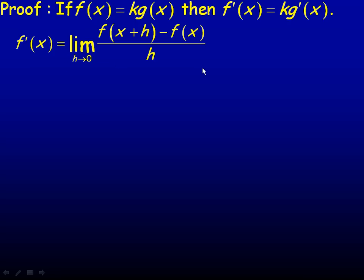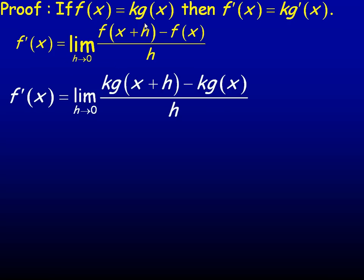So here's the definition of the derivative. Now, f(x) is k times g(x). So I want to find f(x+h). I'm putting x+h in here, and it would be k times g of x+h. So when I replace x+h in place of the x here, it's kg(x+h).